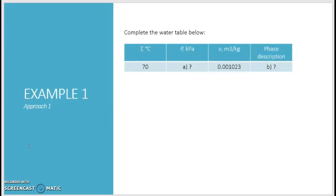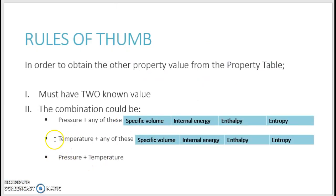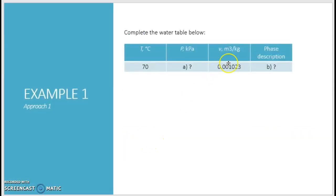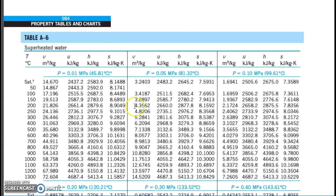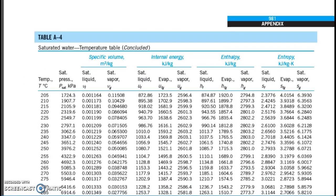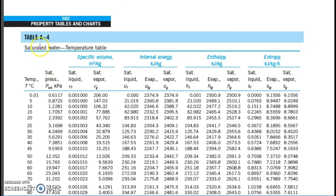Let's have a look at the example. Example 1 — first approach: complete the water table below. You are given temperature and specific volume, and you need to find the pressure and the phase description. You have two known values, so you should be able to read your property table. Given that the combination is temperature and specific volume, we are going to read from the saturated water table with temperature, which is table E4.